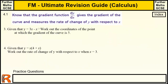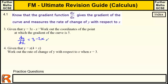Given that y equals 3x minus x squared, work out the coordinates of the point at which the gradient of the curve is 5. We need to find the differential. We're not given a specific x value this time, but we know the gradient, so we work back to find x. The differential of 3x is 3, and the differential of minus x squared is minus 2x. So the gradient function is 3 minus 2x.